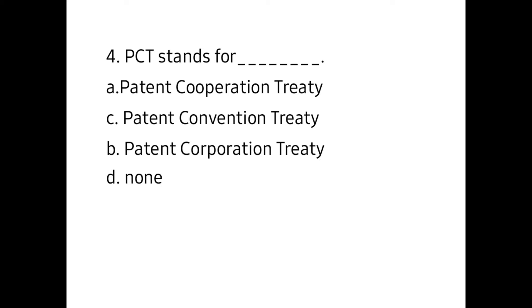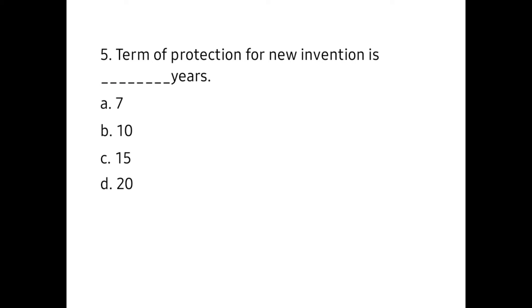Next one, fifth: The term of protection for new inventions is ____ years. a) 7, b) 10, c) 15, d) 20. And the answer is D, 20.